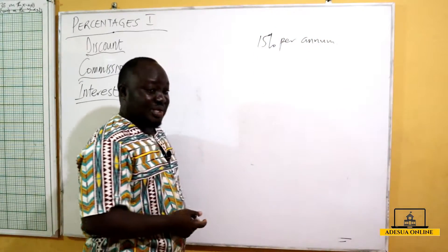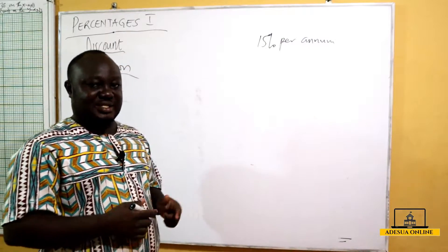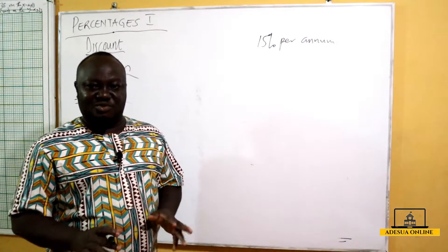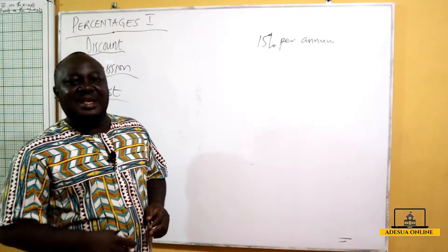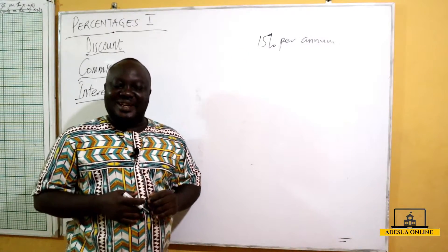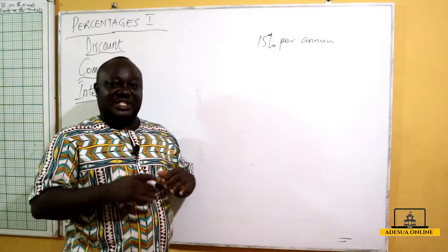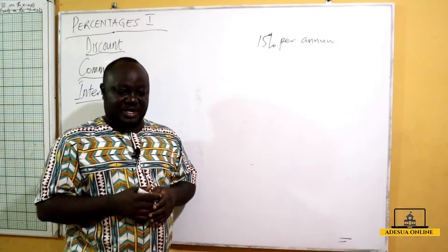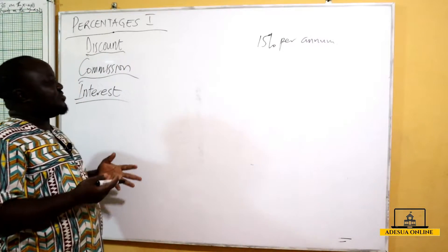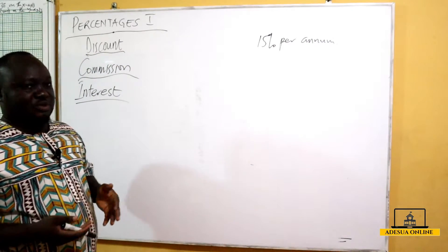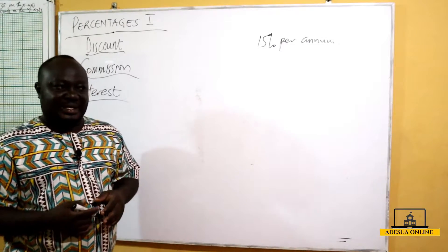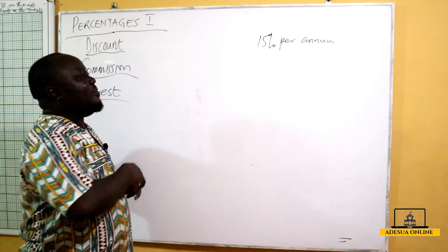I'm just assuming — I'm not saying this is the actual rate, so don't run to the bank because of this. Now assuming 15% is the rate per annum, which is per year, and we want to find the interest on an amount we take to the bank.